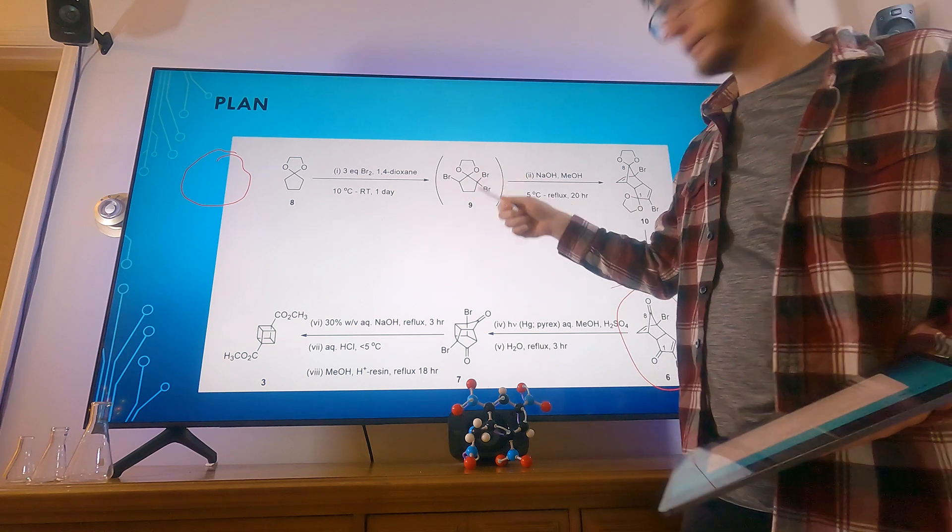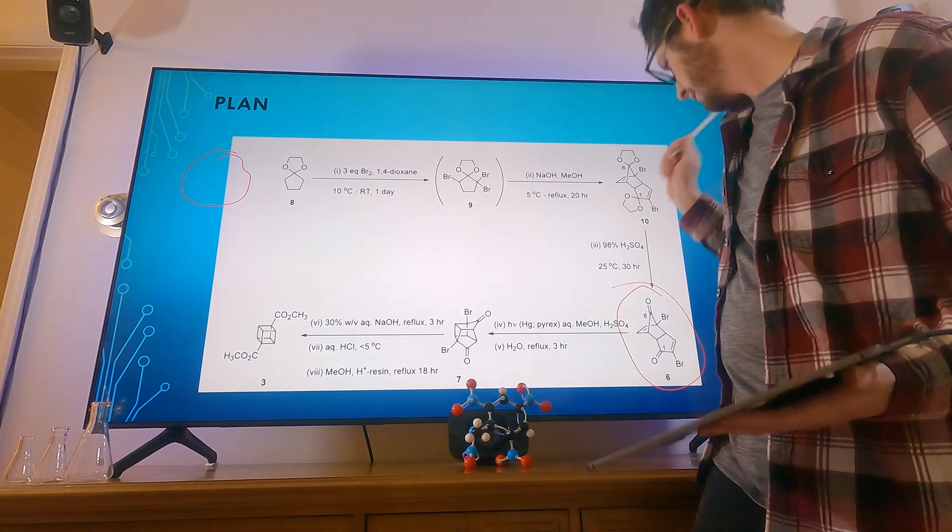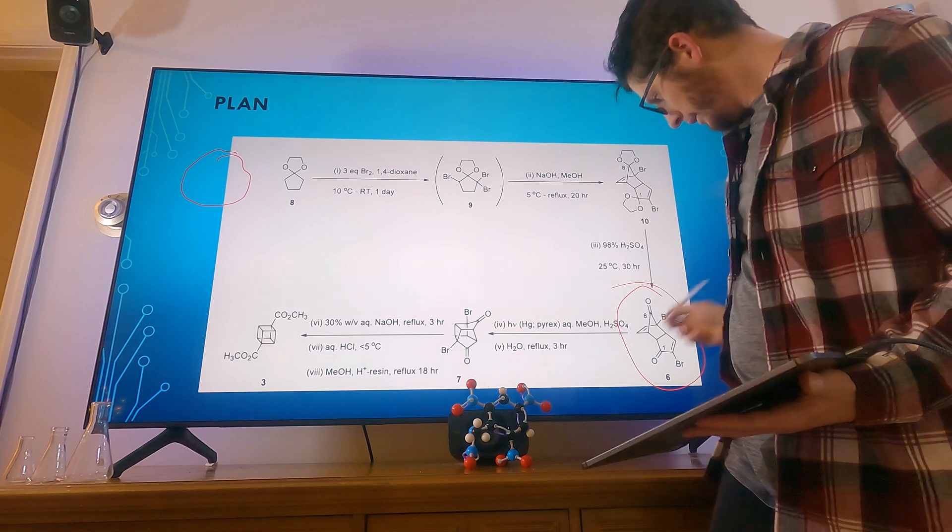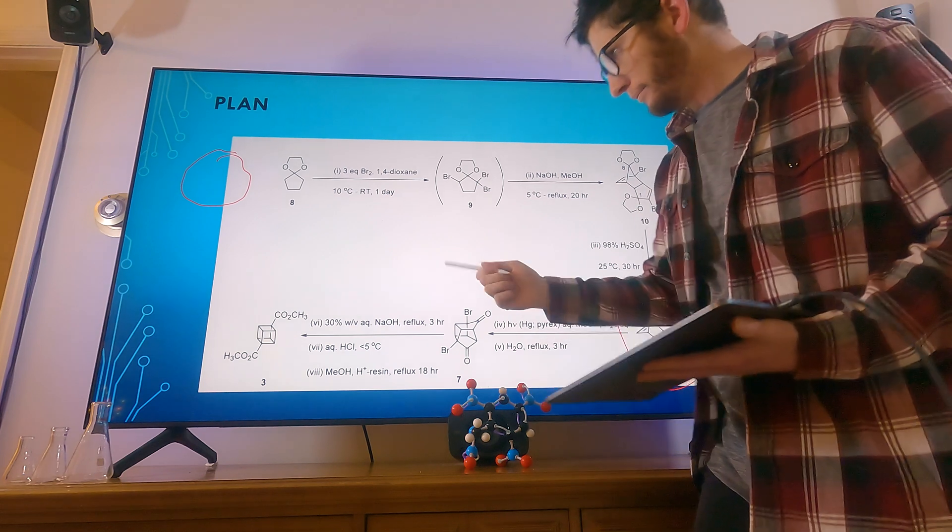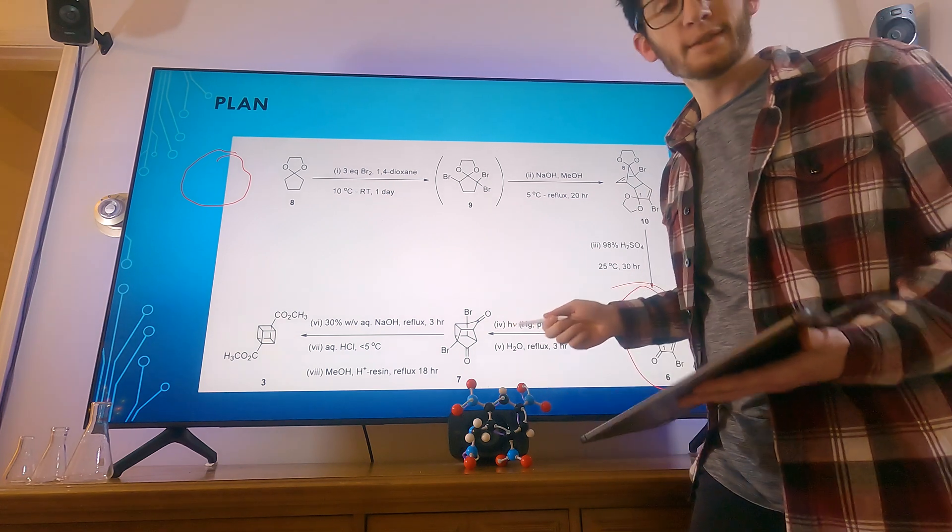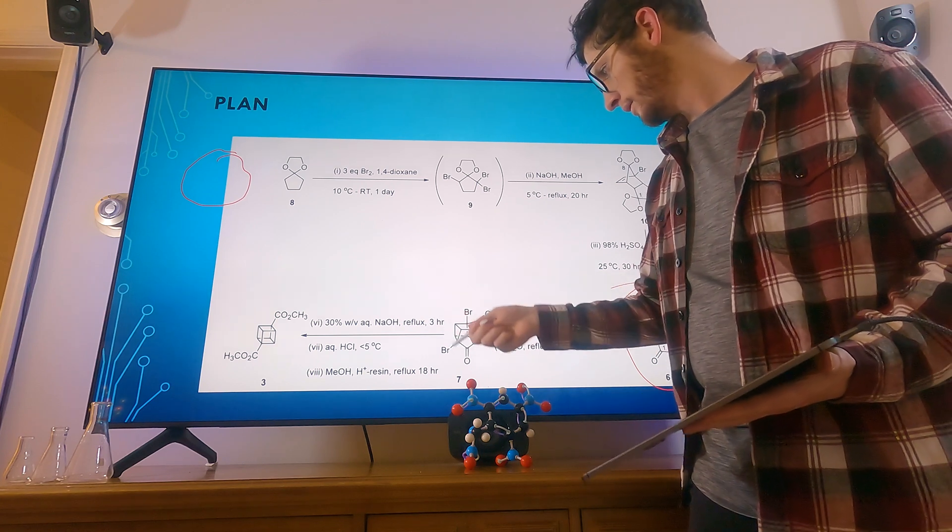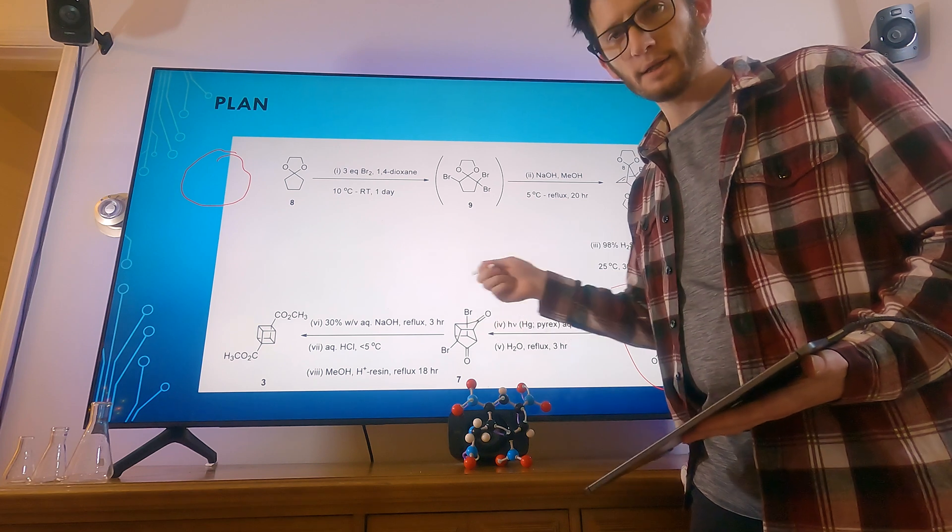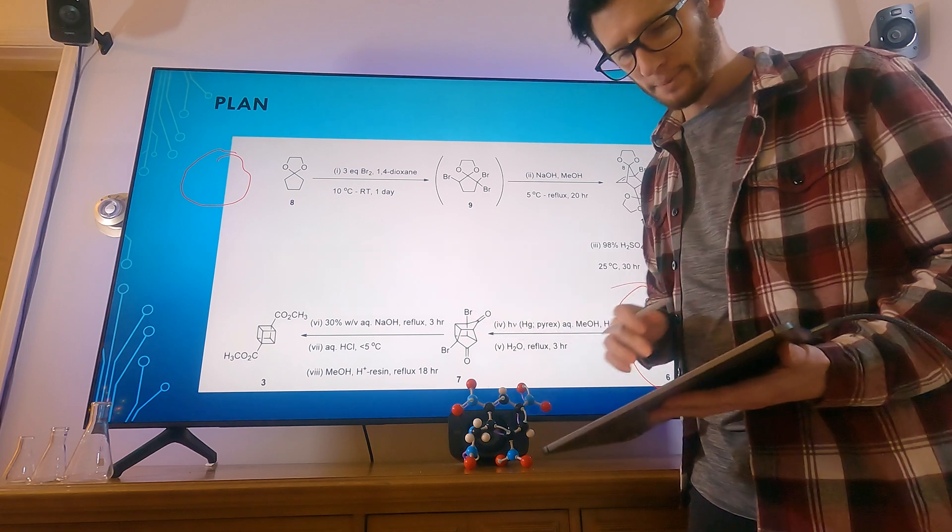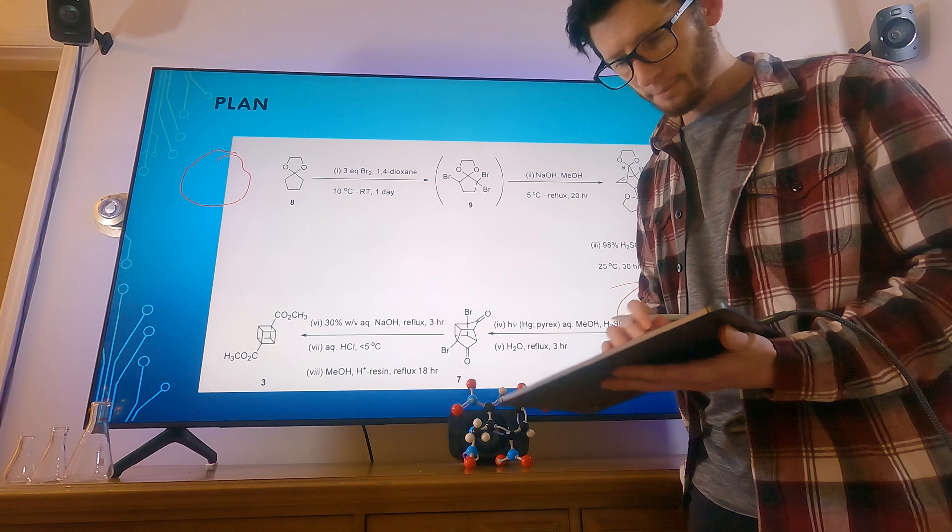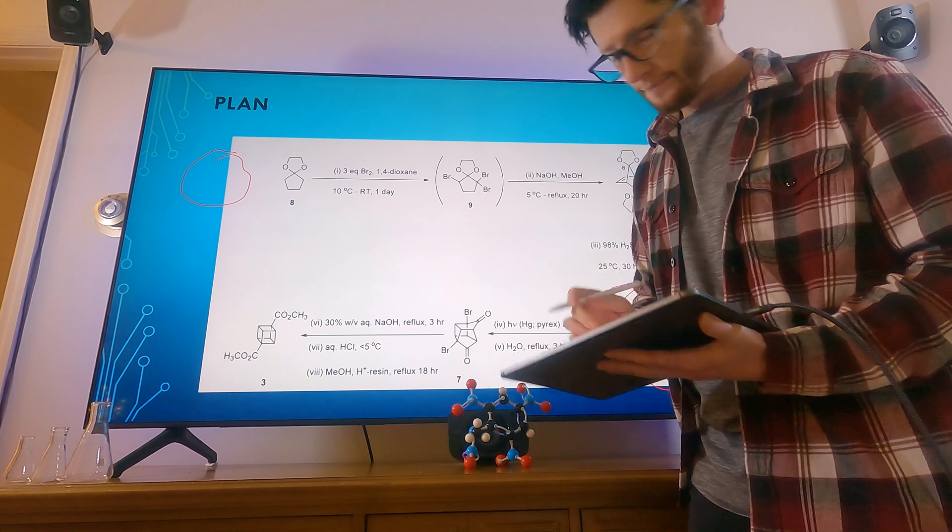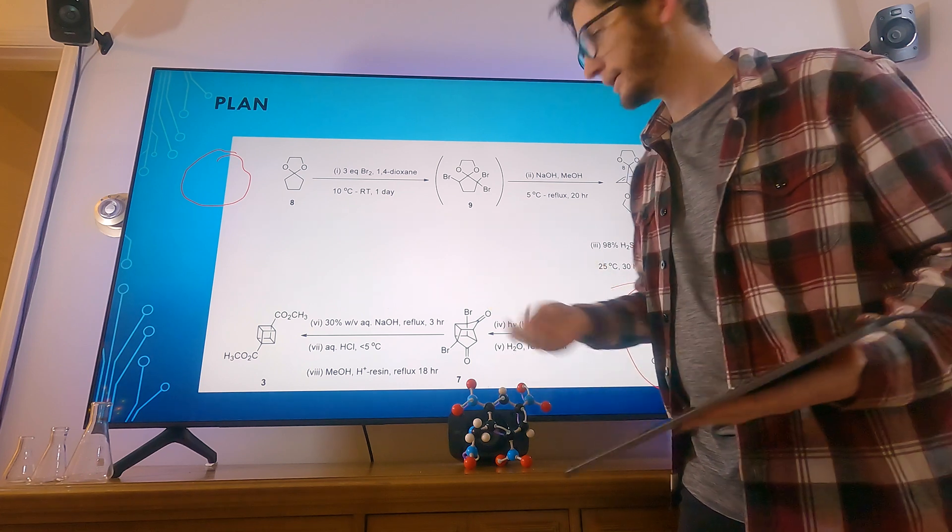And then we'll do our Diels-Alder reaction and get mighty confusing here and here. Then we're going to hopefully successfully do our UV step, and then for a lot, I would like to make a lot of this because I'd like to save some of this.